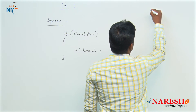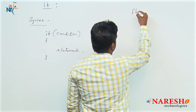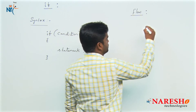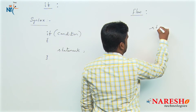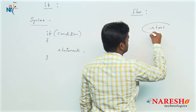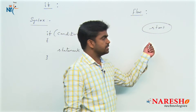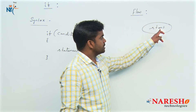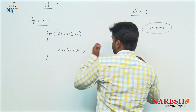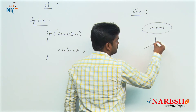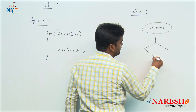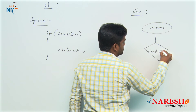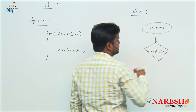Now here is a flowchart showing how the if block works. The starting point is represented with an oval shape. First, we need to check the condition, and conditions are represented with a rhombus shape in the flowchart.